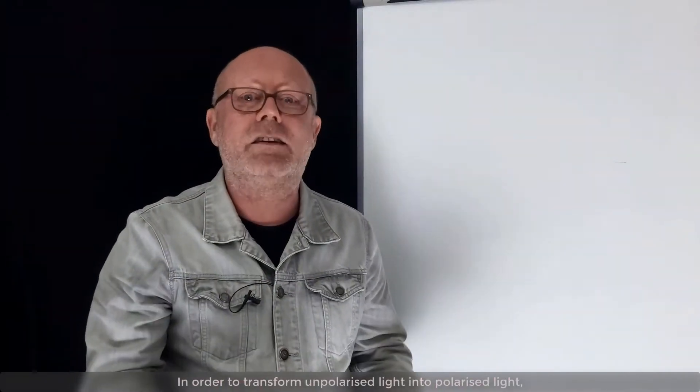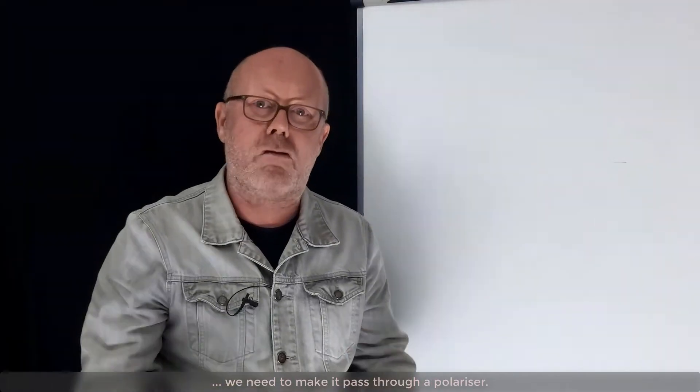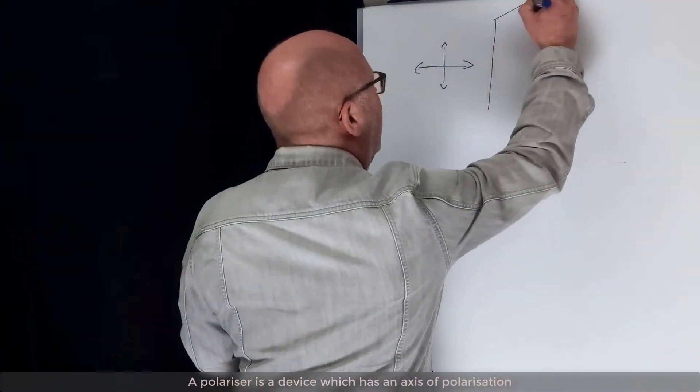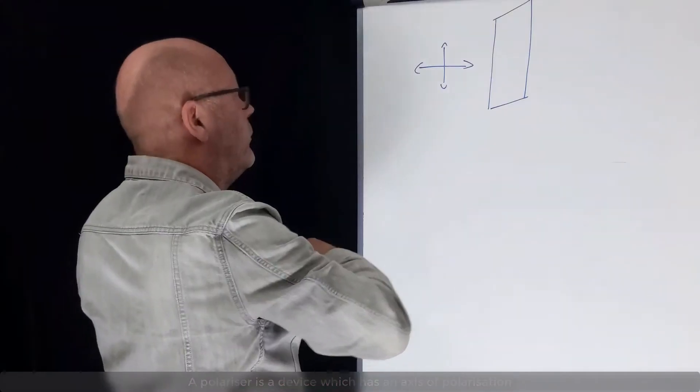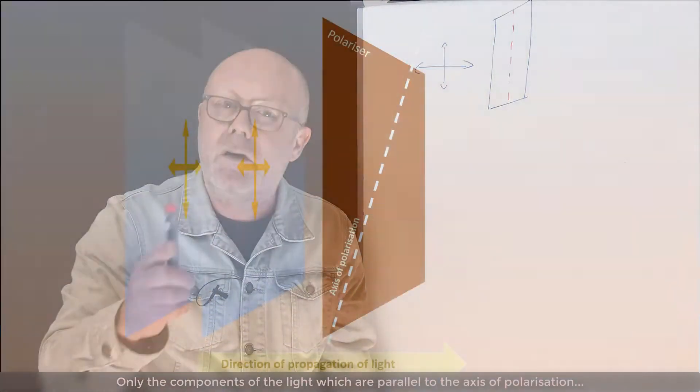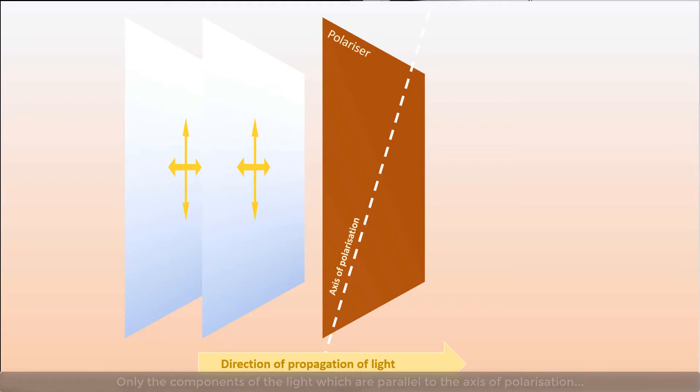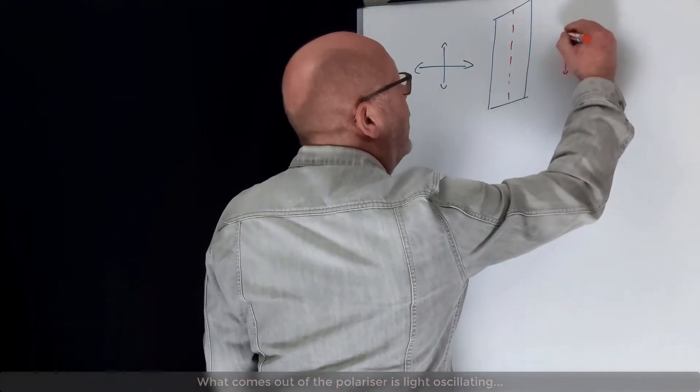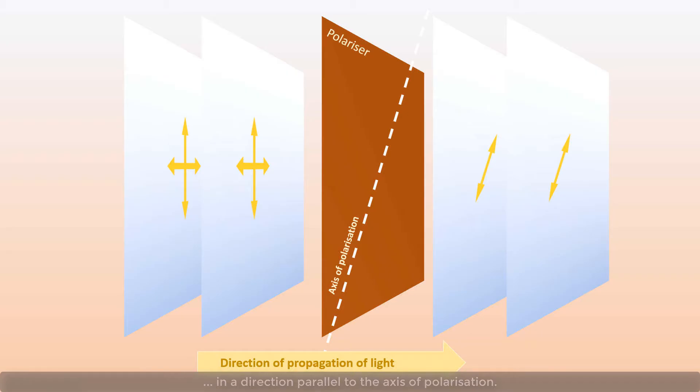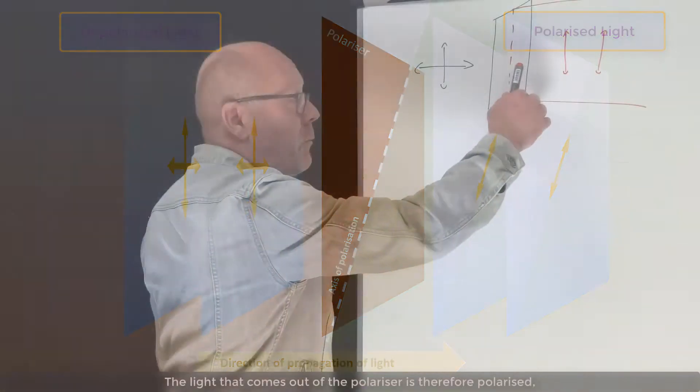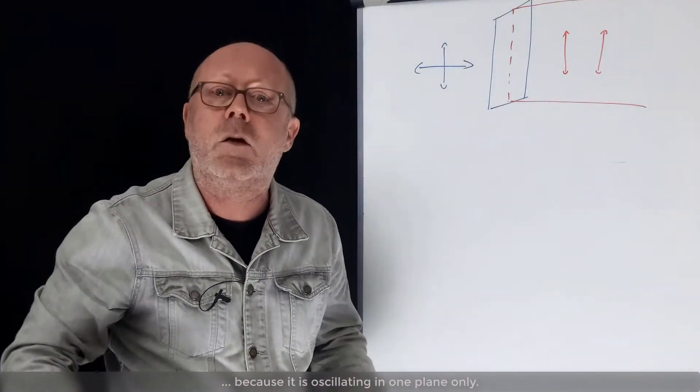In order to transform unpolarized light into polarized light, we need to make it pass through a polarizer. A polarizer is a device which has an axis of polarization. Here, I choose it vertical. Only the components of the light, which are parallel to the axis of polarization, are allowed to pass. So what comes out of the polarizer is light oscillating in a direction which is parallel to the axis of polarization. In other words, the oscillation is within a plane which contains the axis of polarization. The light that comes out of the polarizer is therefore polarized because it's oscillating in one plane only.